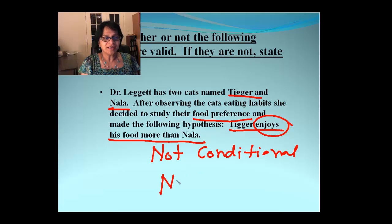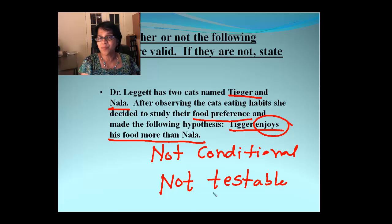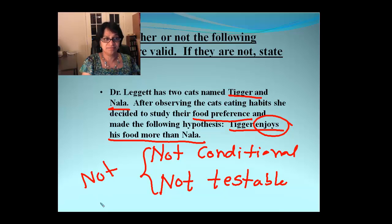In scientific words, we will not be able to test the hypothesis. So, it is not a testable hypothesis. Both these things make the hypothesis not valid. So, we cannot do the experiment and prove this hypothesis at all. Let's take one more example.